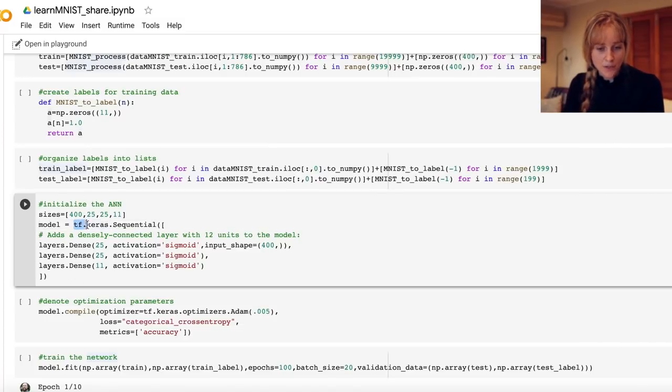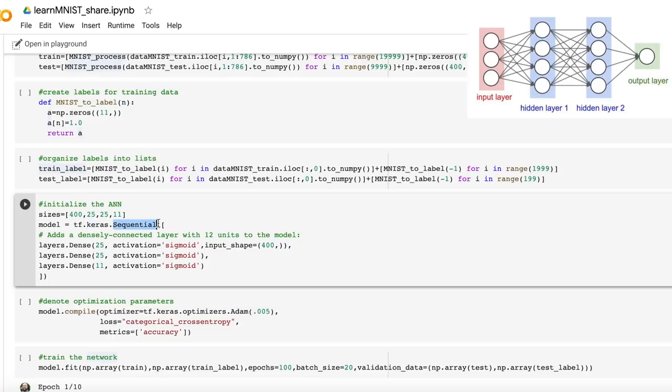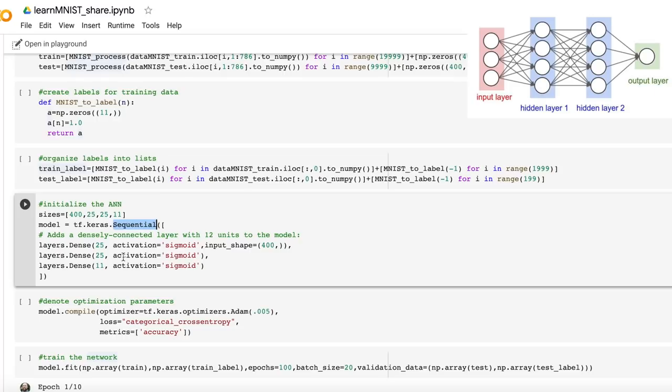We are using TensorFlow and some part of the TensorFlow library called Keras, which must be the part that deals with neural networks. And we're setting up a sequential network, probably meaning that we're feeding the output from one layer of neurons to be the input for the next layer and it sort of cascades like that. We're setting up each layer to be dense, so each neuron will be connected to every other neuron. We have a row of 25, a row of 25, and then a final row of 11.